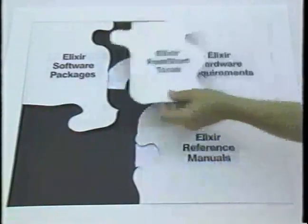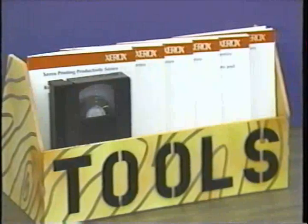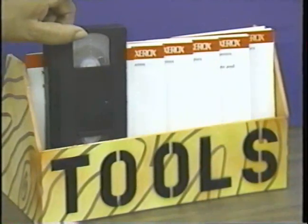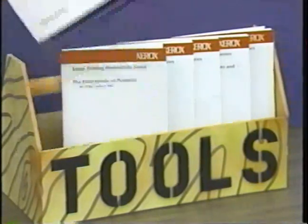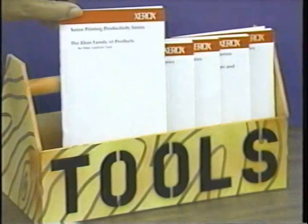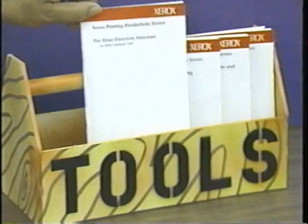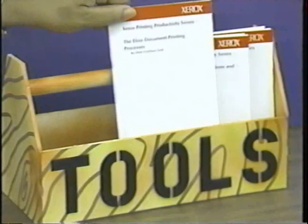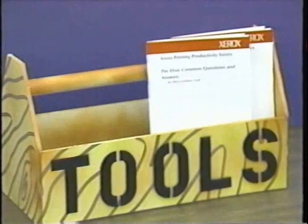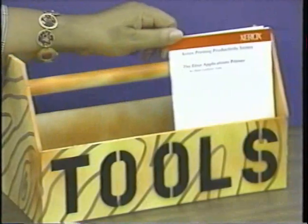Next, let's look at the Elixir Fast Start tools. These are job aids designed especially to help you become self-sufficient in creating applications using your Elixir system. The Fast Start tools include this Elixir video plus any optional product videos you purchased, and booklets including: the Elixir Read Me First booklet, a roadmap to guide you through Elixir support materials, the Elixir family of products overview, the Elixir directory structure booklet, the Elixir document printing processes booklet, Elixir common questions and answers, and the Elixir applications primer.